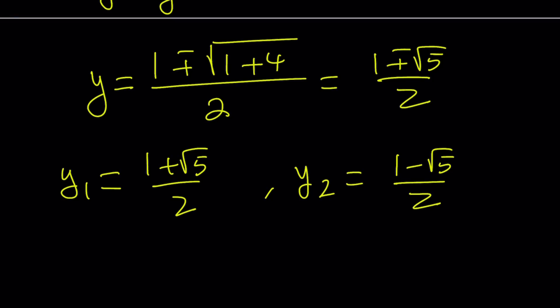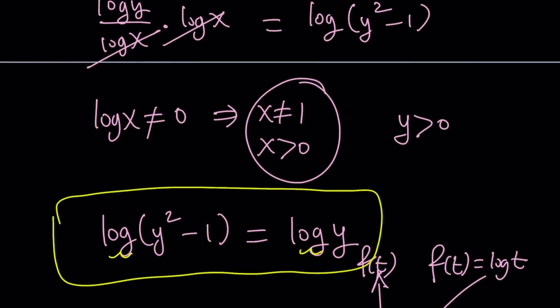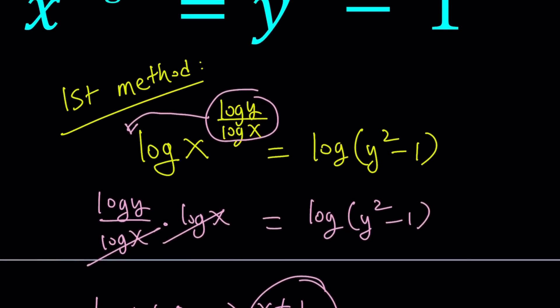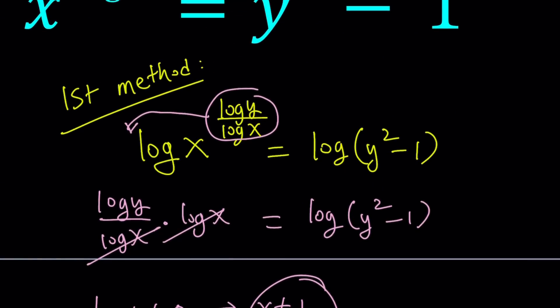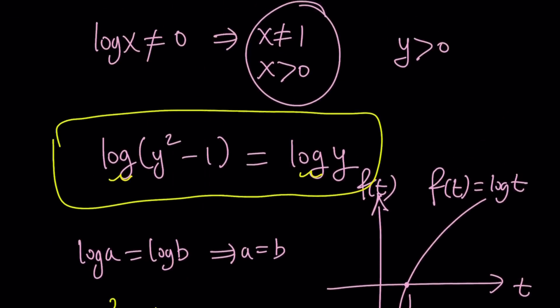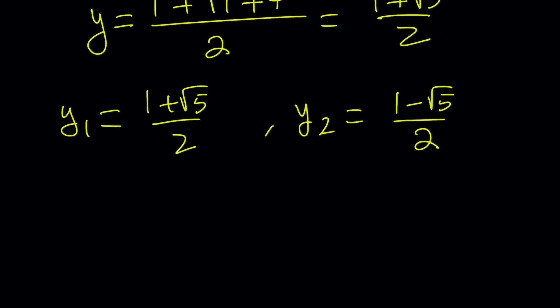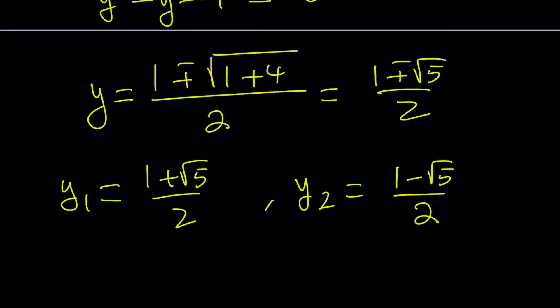So we have two solutions, but we have to check them. Why? Because we have a domain for x and y. Since we're not really dealing with y as a function of x, we can kind of talk about the domain of both of these. And we said that y must be positive, x must be positive, and x must be different from 1. Now, do our solutions satisfy that criteria? Y must be positive.